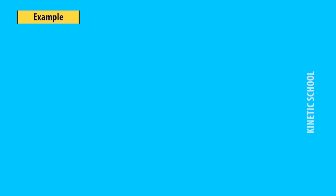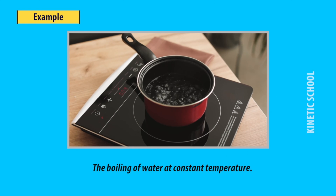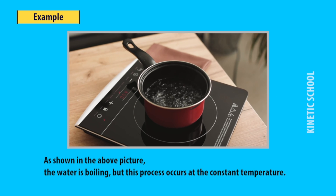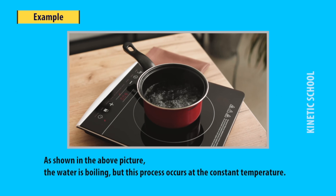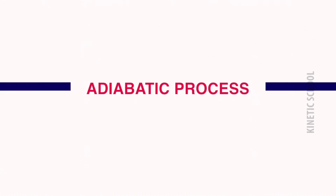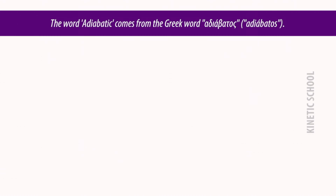For example, the boiling of water at constant temperature. As shown in the picture, the water is boiling but this process occurs at a constant temperature.